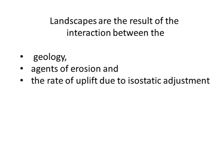When we look at landscapes, we're looking at three things interacting: the geology — that's the rock types, the rock hardness, those kinds of things, and the rock structure; agents of erosion — rivers, wind, ice; and the rate of uplift due to isostatic adjustment.